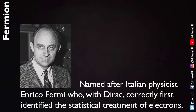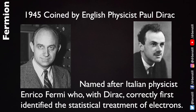They were named after Italian physicist Enrico Fermi, who along with English physicist Paul Dirac correctly first identified the statistical treatment of electrons. The word fermion was coined by Paul Dirac himself in a lecture that he gave in 1945.